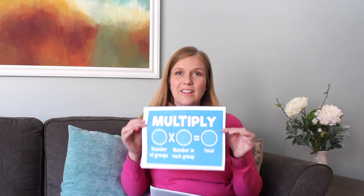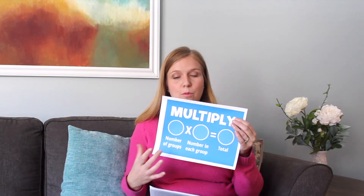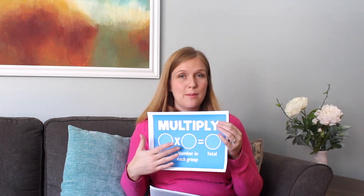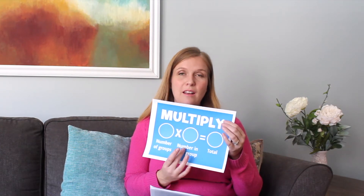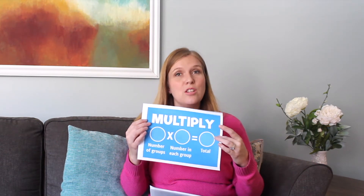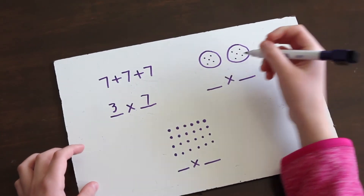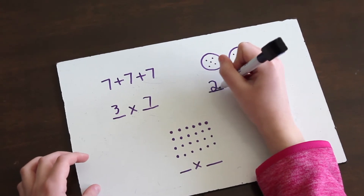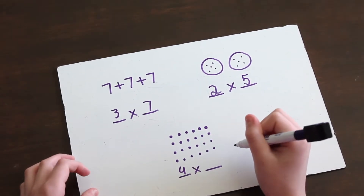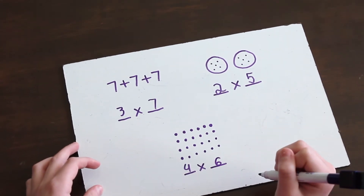Another important skill for kids to know when multiplying is how we write a multiplication equation. So we have a number — that's the number of groups — and then we do our times symbol, and then we do another number, which is the number in each group. Then we put equals and the total all together. You could have the number added together so many times, and then they write the equation that goes with it. You could also draw an array or pictures of groups and have students write the equation that goes with that picture, and they can easily count how many objects there are.